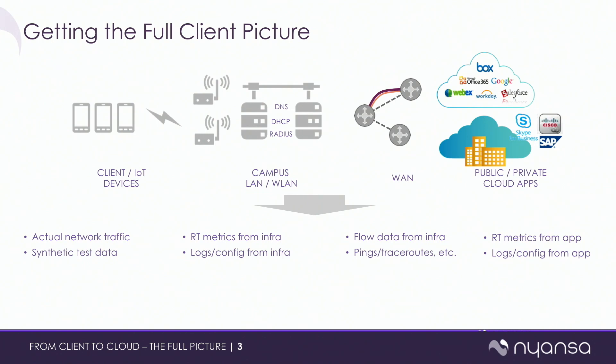Finally, from applications — some applications actually have APIs where you can get ground truth directly from the application itself. For example, from a Skype for Business call you can get the exact stream quality or MOS score, or from ASCOM devices you can get what the user experience was. So this is all the data available.